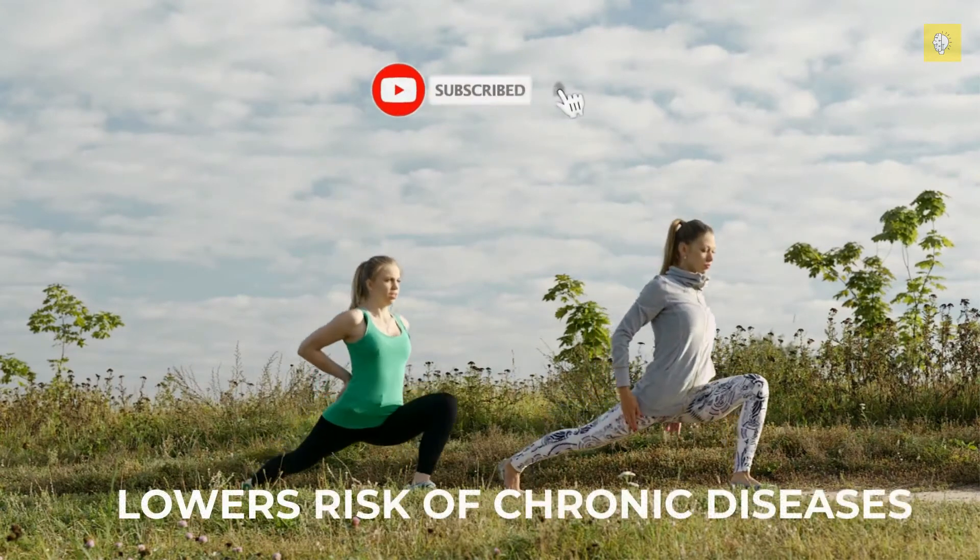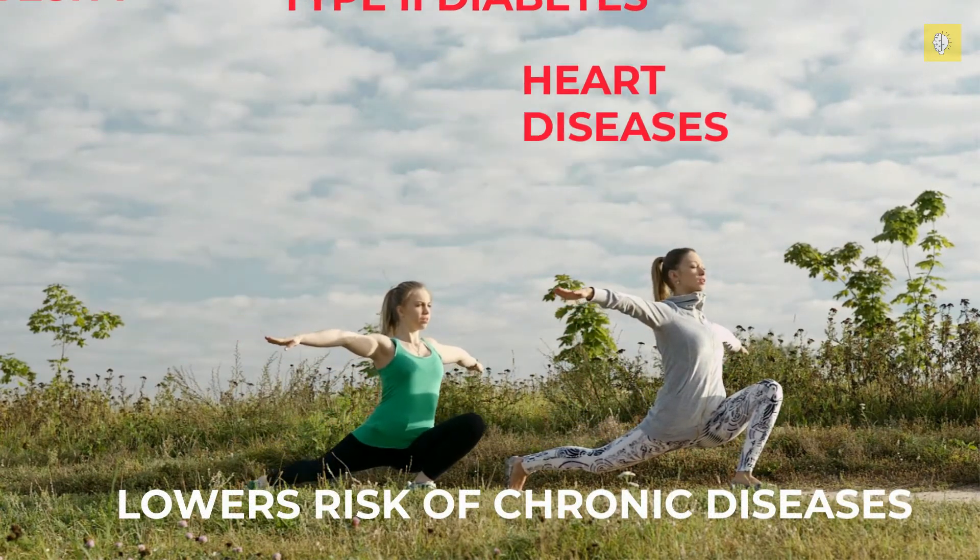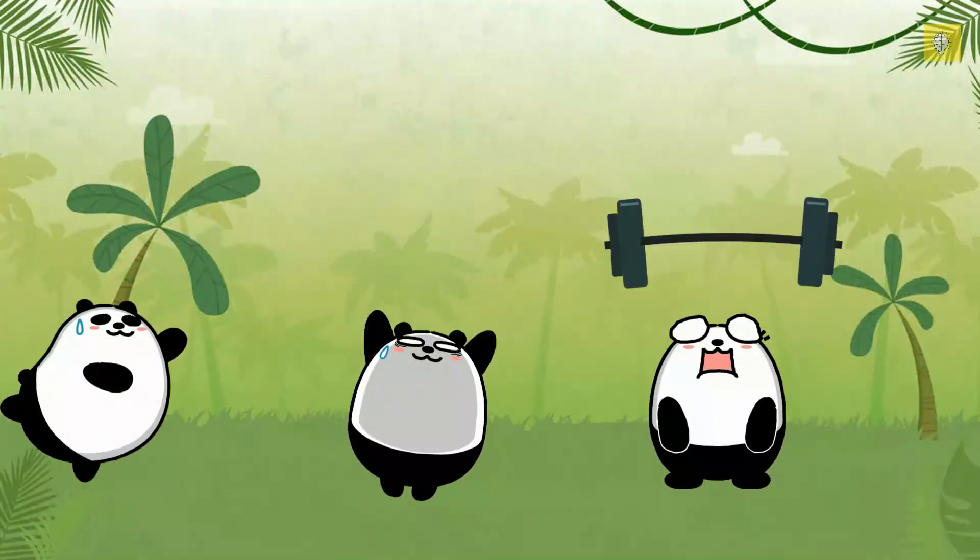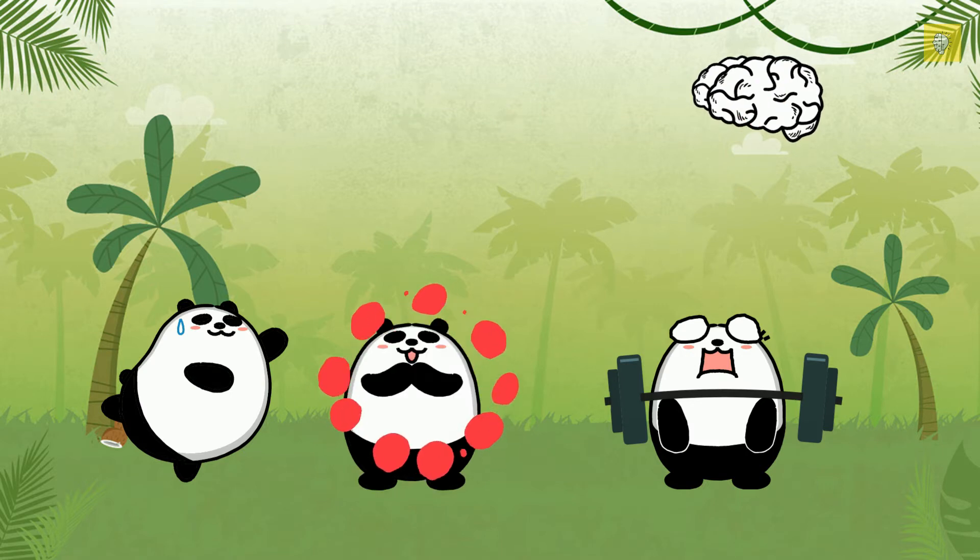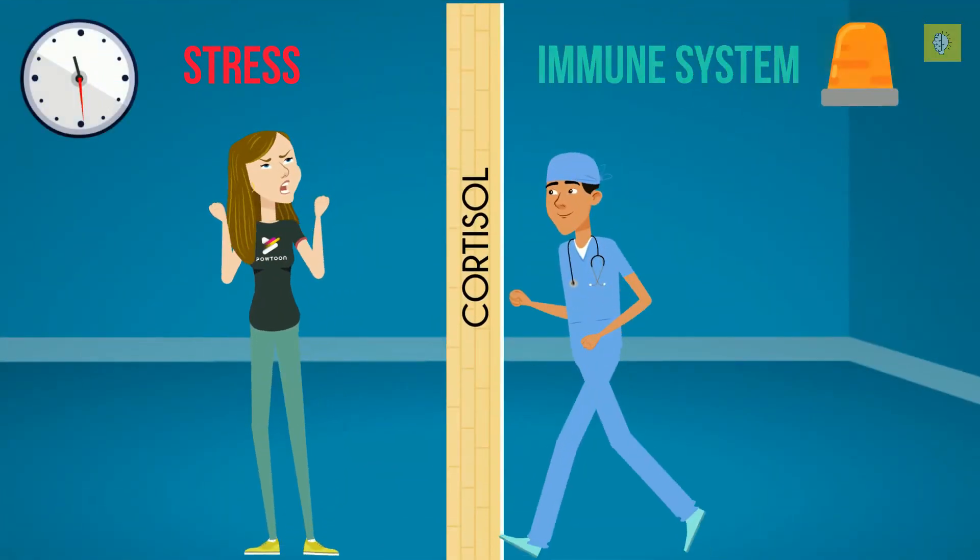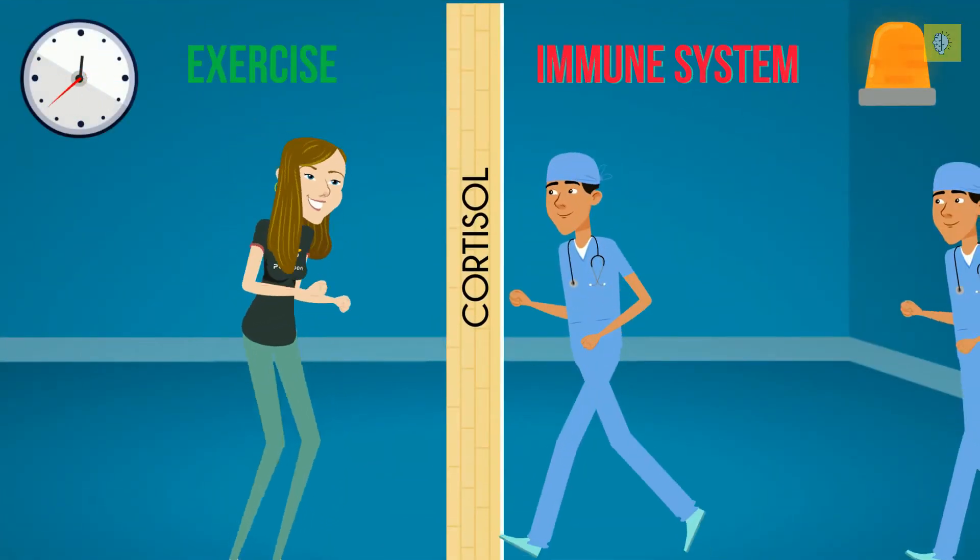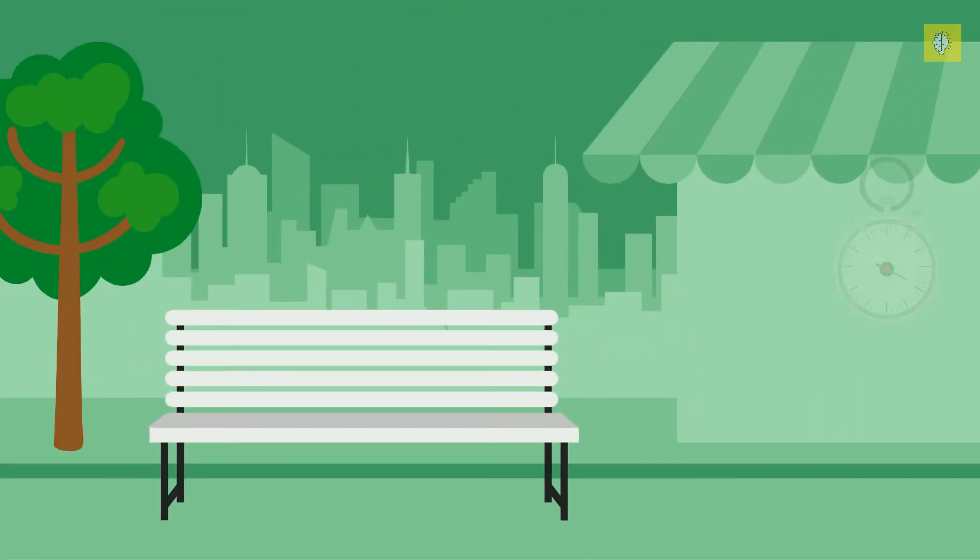Regular exercise lowers your risk of developing chronic diseases like obesity, type 2 diabetes and heart diseases. Exercise also increases the release of endorphins that reduce pain and create feelings of pleasure, making it a great way to manage stress. Since stress negatively impacts our immune system, this is another way exercise can improve immune response.